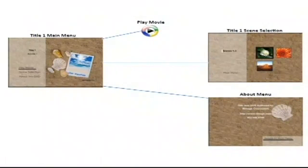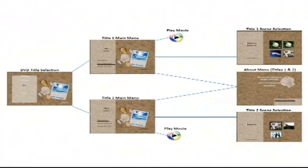Just to be clear about the titles, here's a diagram of the menu with one title which shows a Play Movie button and a Scene Selections button. The menu with two titles will have one main menu and two sub-menus, which will allow you to play the slideshow separately from the videos.